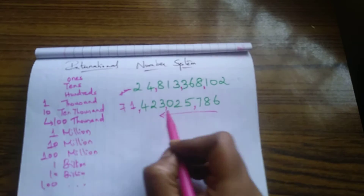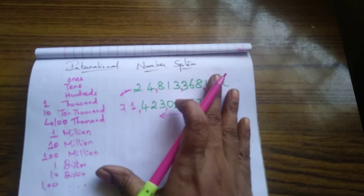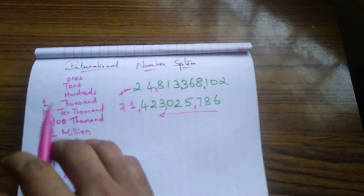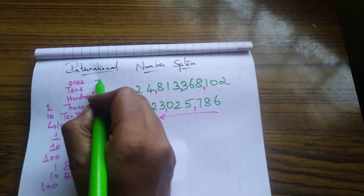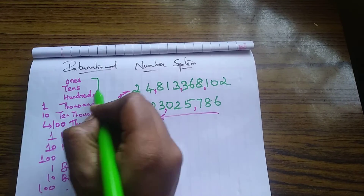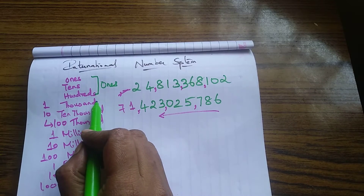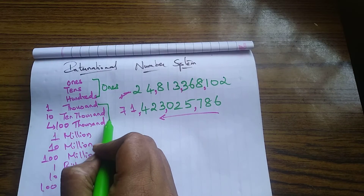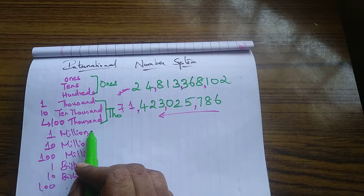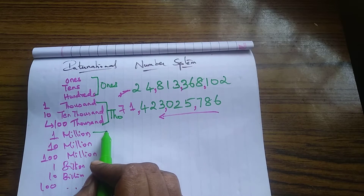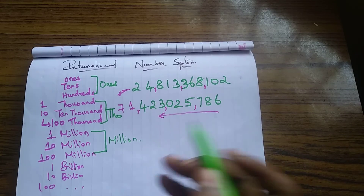Never forget children, it's very easy. How are the digits grouped here? Ones, tens, hundreds are grouped under the ones group. Thousands, ten thousands, hundred thousands are grouped under the thousands group. And one million, ten million, hundred million are grouped under the millions group.